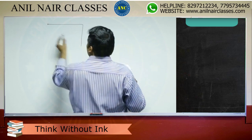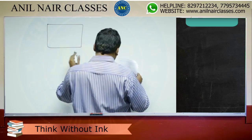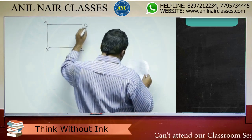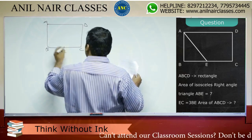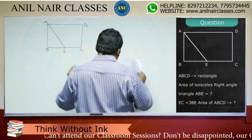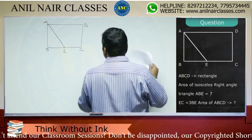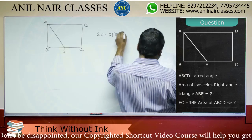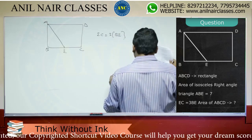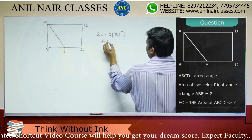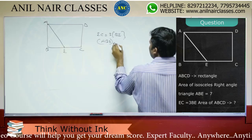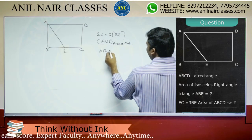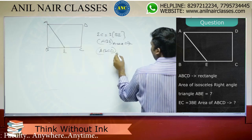ABCD is a rectangle. EC is equal to 3 times BE, and the area of triangle ABE is 7. Find the area of ABCD — no formulae.